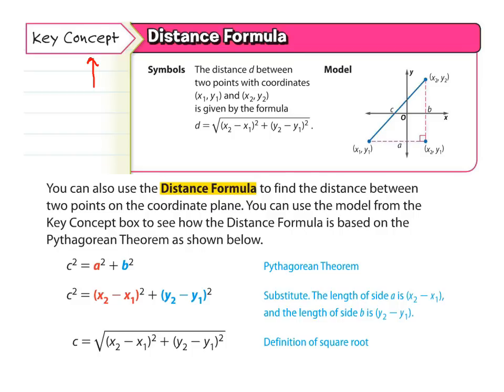To see how the distance formula is based on the Pythagorean theorem as shown below. So we have C² equals A² plus B². That's our Pythagorean theorem. So for A², we substituted (x₂ - x₁)². That got substituted in there. And for B², we substituted (y₂ - y₁)². And we find the square root of those two differences to find the distance.